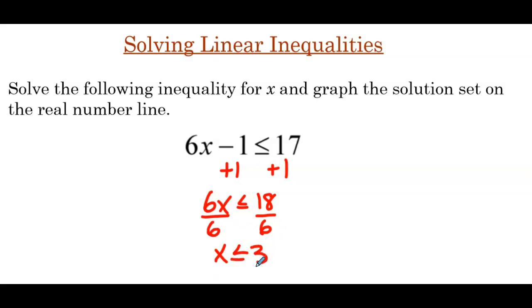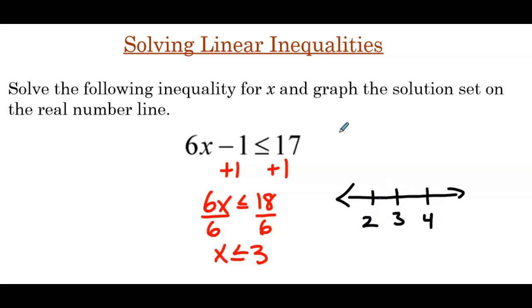Now we need to graph this solution set on a number line. We'll draw a number line and put 3 in, including 2 and 4. Because we have equality, we have a closed point at 3. We need to think about x values that are less than 3 — so 2, 1, 0 — those are numbers to the left on the number line, so we shade to the left.